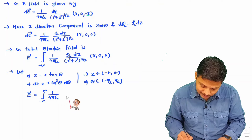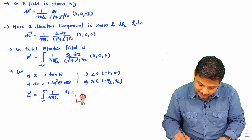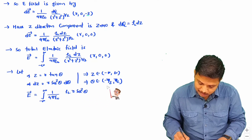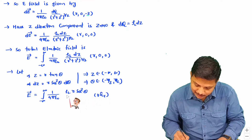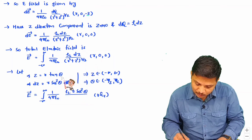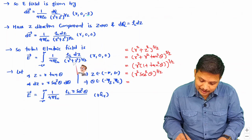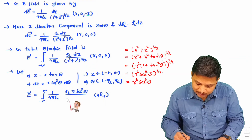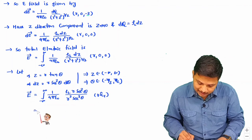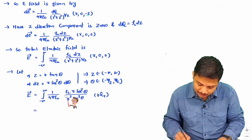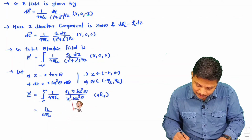So the electric field integral becomes: 1 by 4 pi epsilon 0, rho_l into dz which is r sec squared theta d theta, times r into a_r, divided by (r squared plus z squared) raised to 3/2. Substituting z equals r tan theta, (r squared plus z squared) becomes r squared times (1 plus tan squared theta) equals r squared sec squared theta, so raised to 3/2 that gives r cubed sec cubed theta. Simplifying: rho_l by 4 pi epsilon 0, with r times r giving r squared in the numerator over r cubed, leaving 1/r.